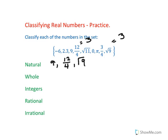Whole numbers are natural numbers plus 0. So we have 9, 12 over 4, square root of 9, and 0.